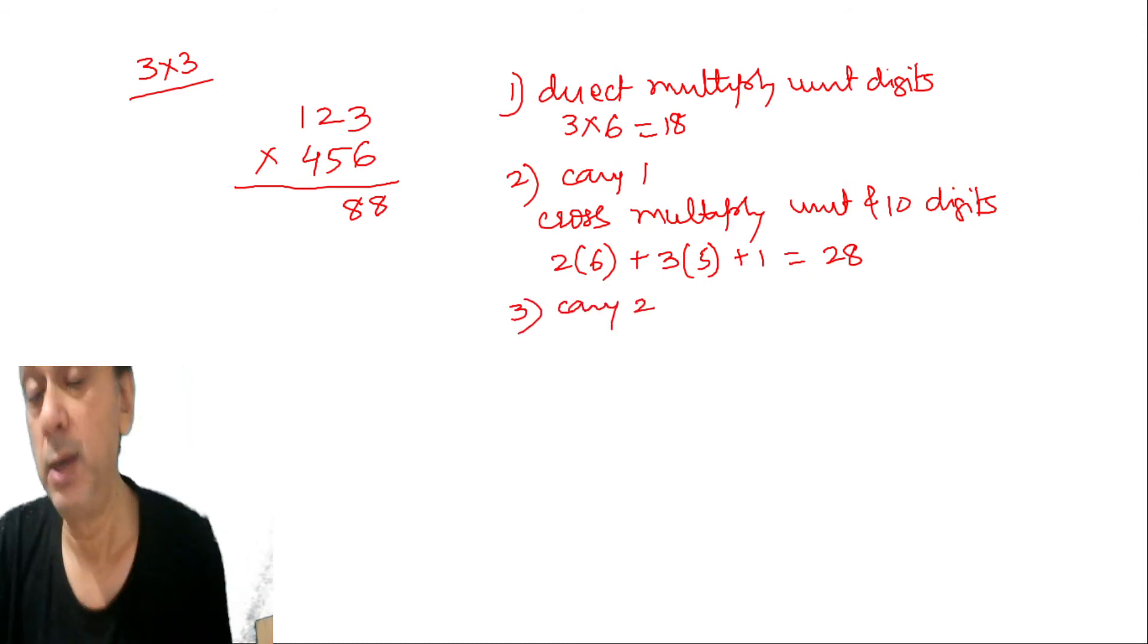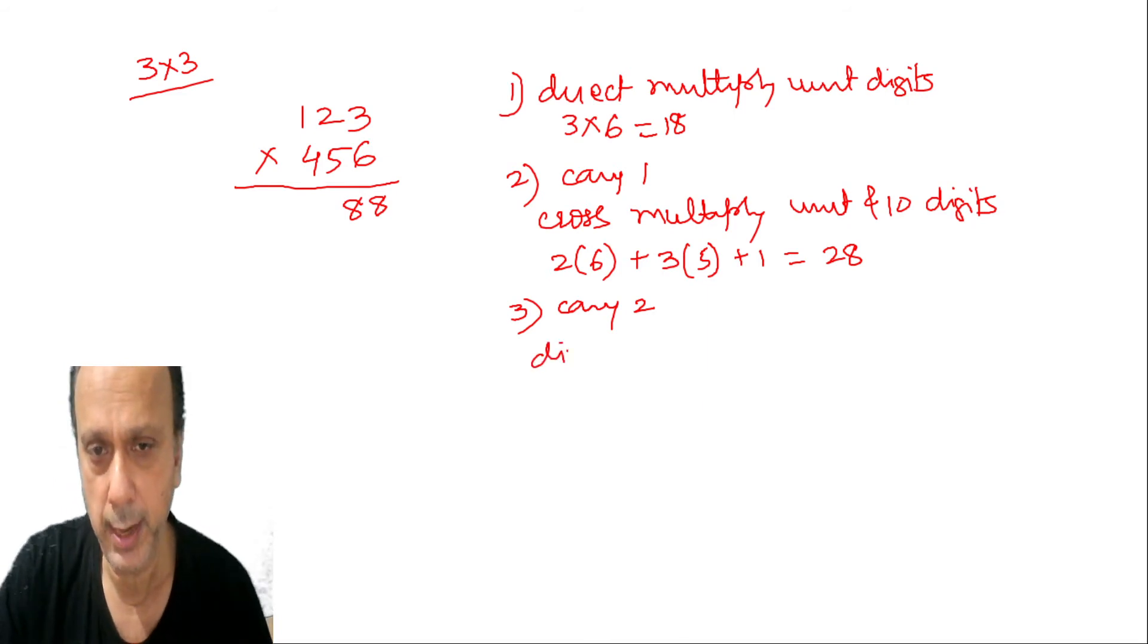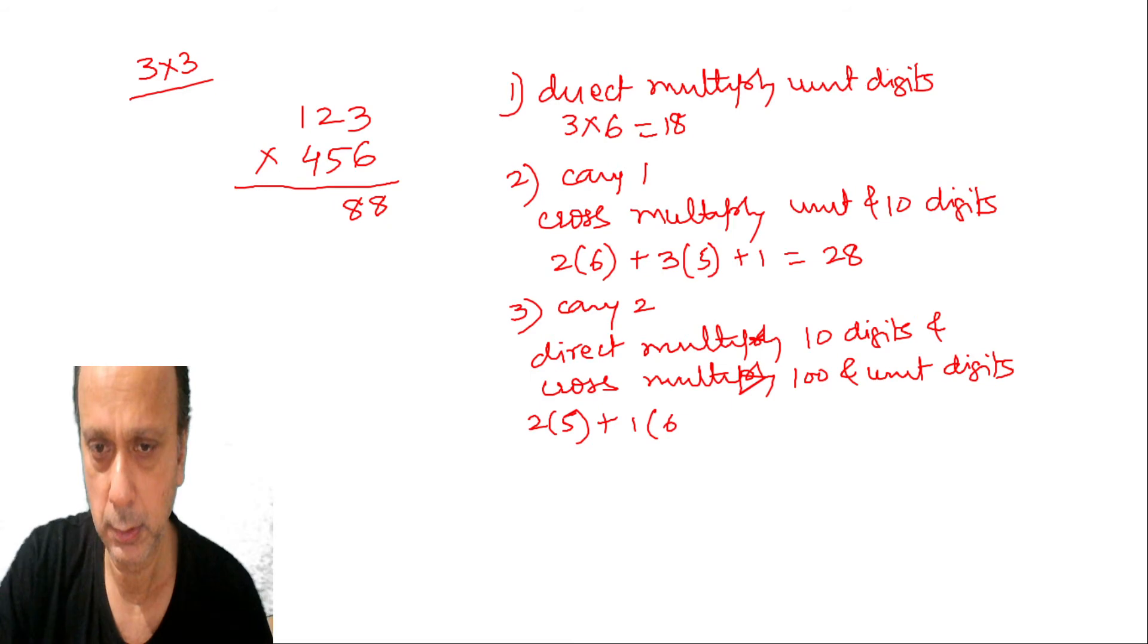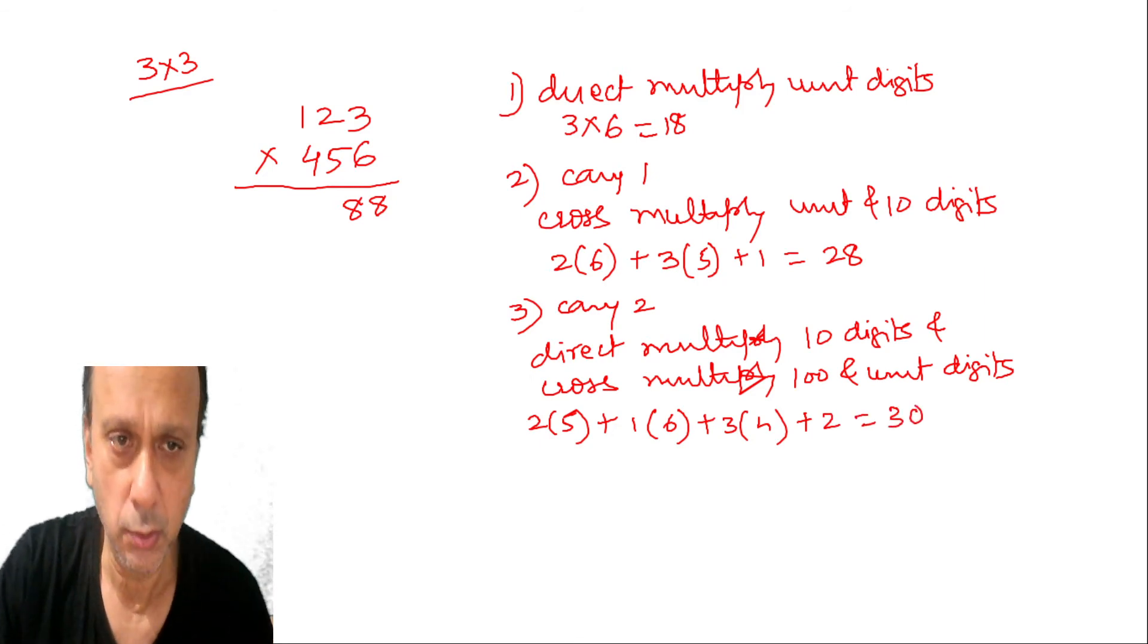Now this is the most important step. You have to direct multiply ten digits and simultaneously cross multiply hundred and unit digits. So it will be 2 into 5 plus 1 into 6 plus 3 into 4, and add the carry forward. The answer is 30. So write 0 in the unit place in the answer slot and carry 3 for the next step.